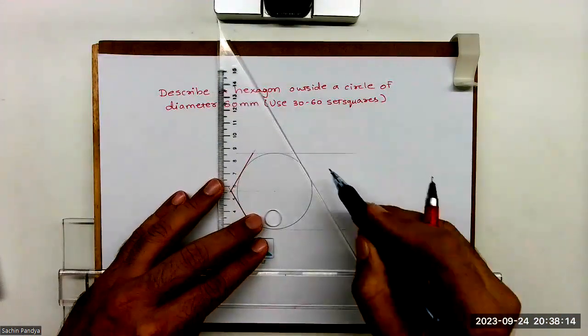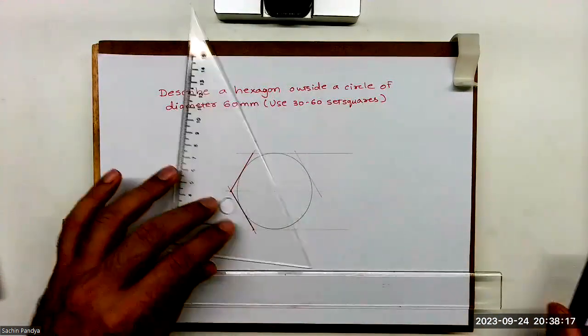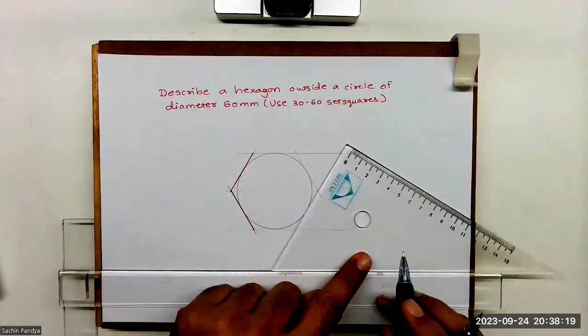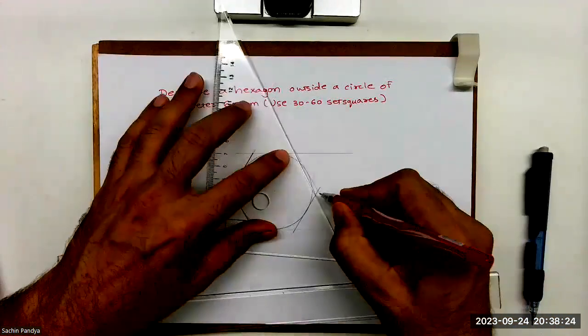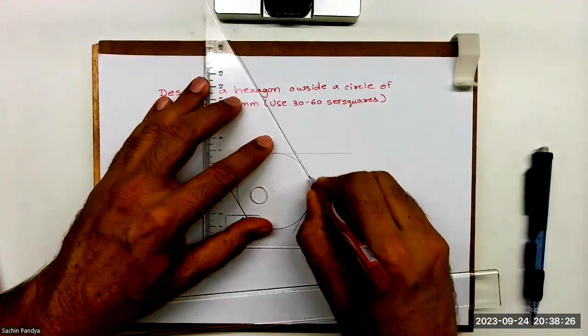I will keep it like this and I will draw tangents. See when I'm keeping it, I'll make sure that it is tangent and I will draw line like this. This is how you will get hexagon outside of circle.